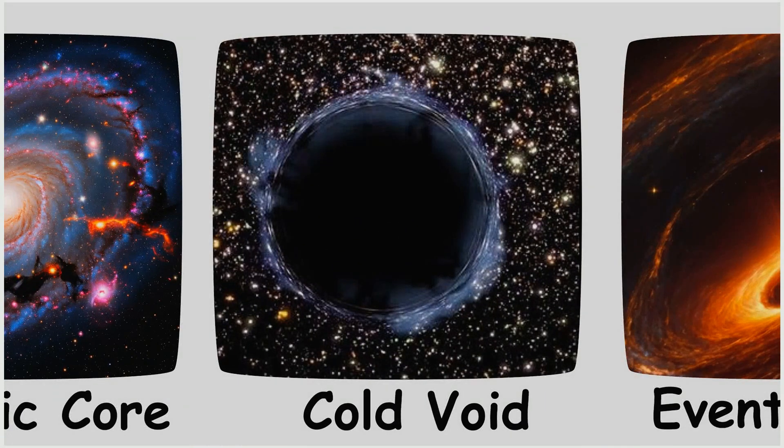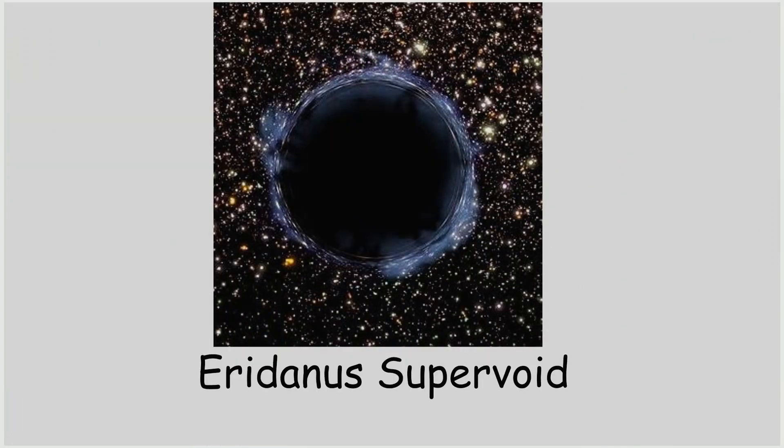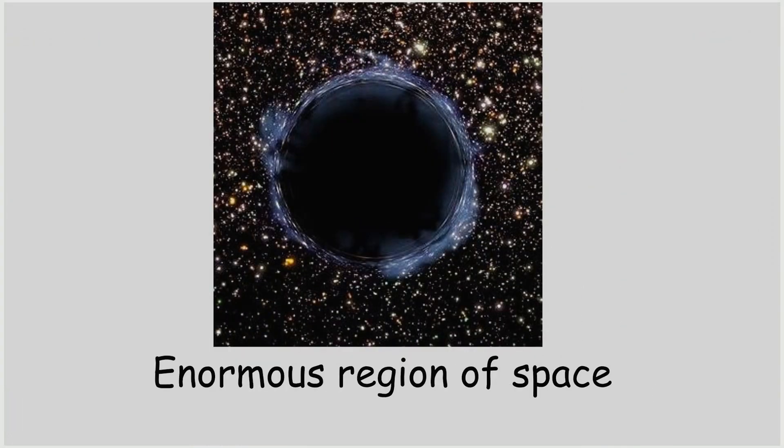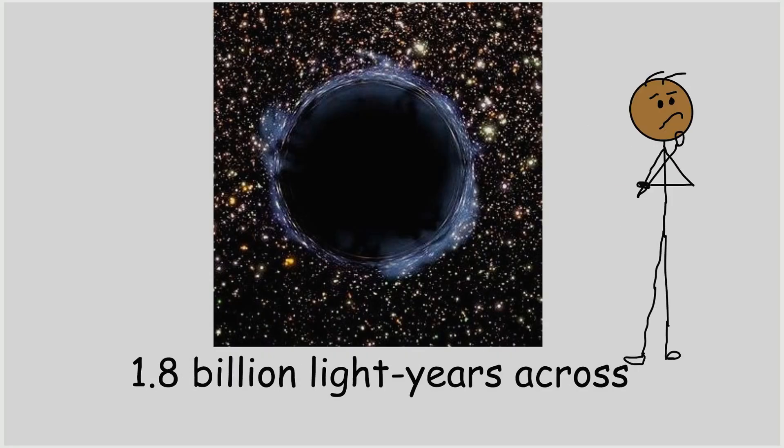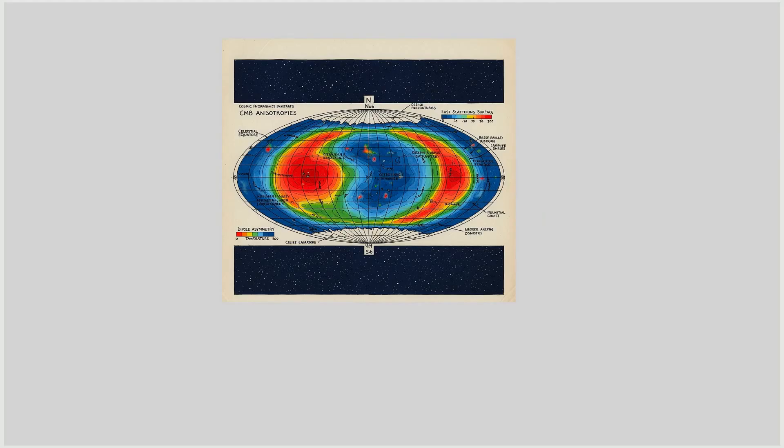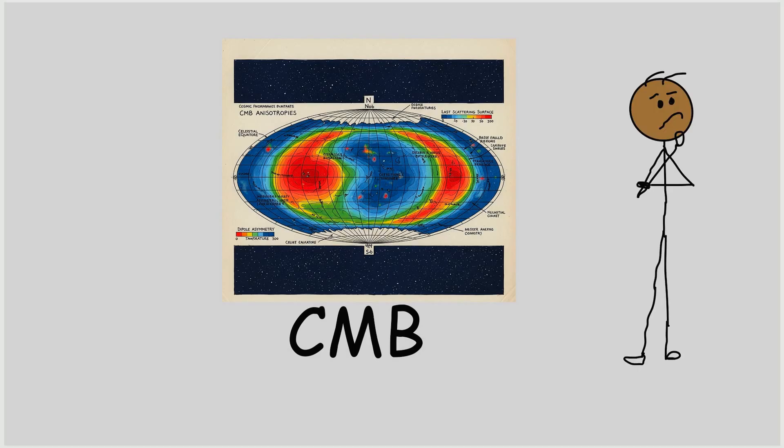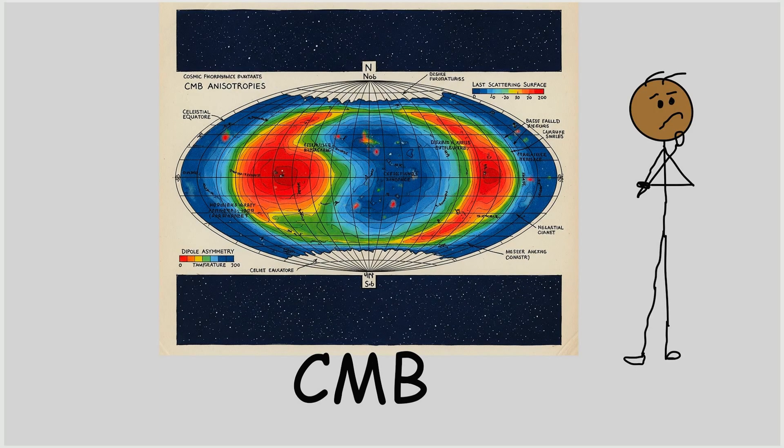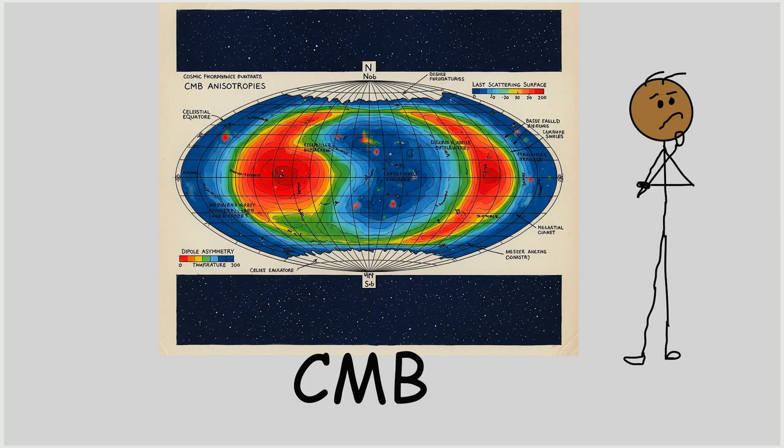The Eridanus Supervoid. The Eridanus Supervoid is an enormous region of space that is unusually cold and largely empty, stretching about 1.8 billion light-years across. It is associated with the cold spot in the cosmic microwave background (CMB), a patch of sky that is significantly cooler than surrounding regions. This has puzzled cosmologists because the uniformity of the CMB was expected to be more consistent across the entire sky.